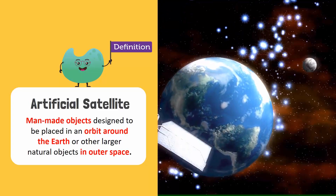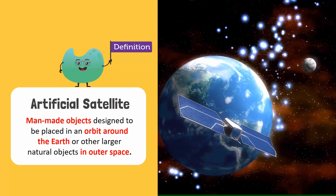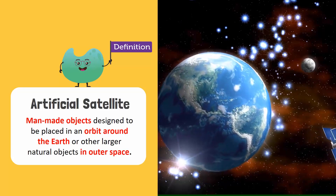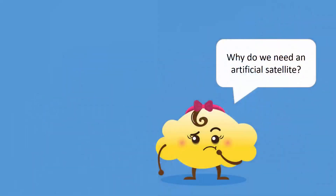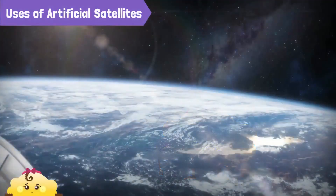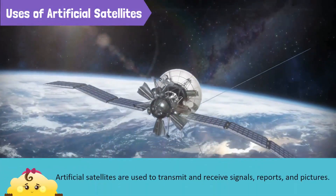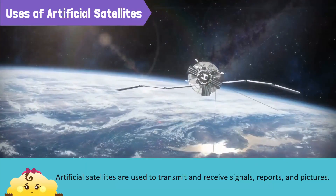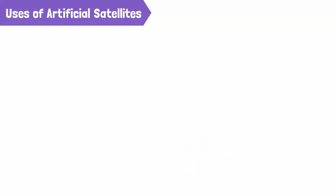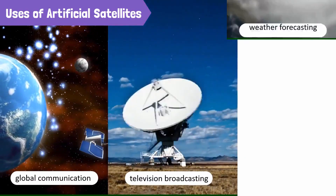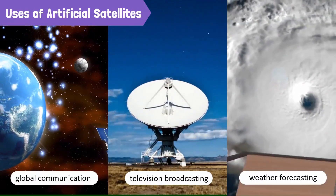Man-made objects designed to be placed in an orbit around the Earth or a larger natural object in outer space are called artificial satellites. Why do we need an artificial satellite when we already have so many natural satellites in space? These satellites are used to transmit and receive signals, reports, and pictures from outer space. We also use these satellites for global communication, television broadcasting, and weather forecasting.